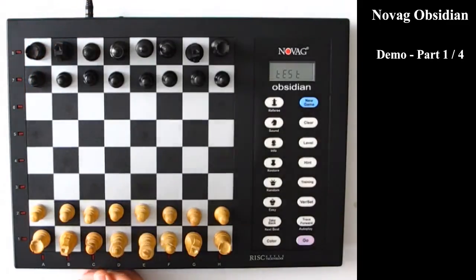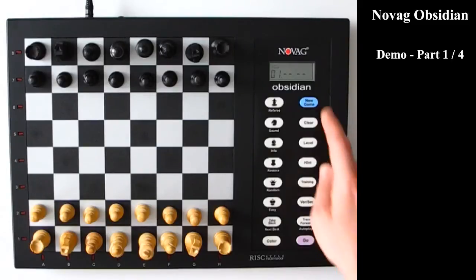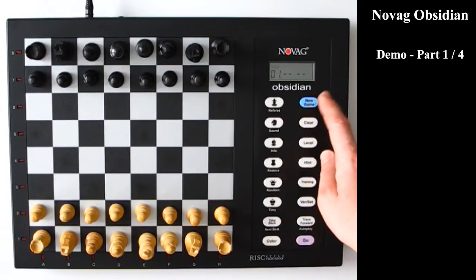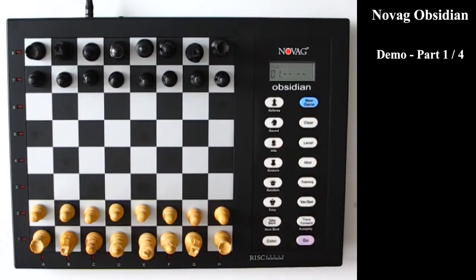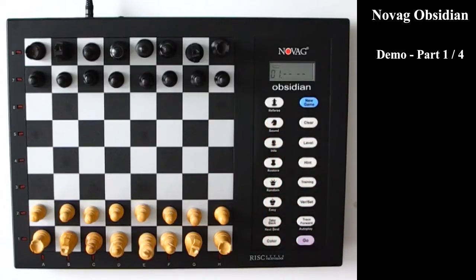So here's the switch on the side. So on the control panel you see a bunch of buttons with different functions. Here's new game. I'll go into all the rest later. There's a sound button here. So you can turn the sound on and off. And there's also a half on. So in that case only the computer will make a sound when it makes a move.